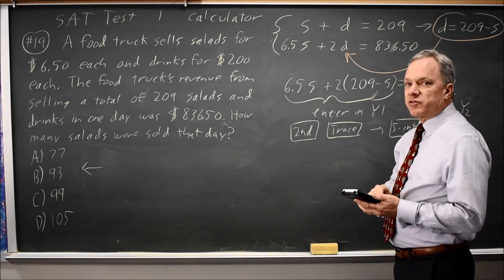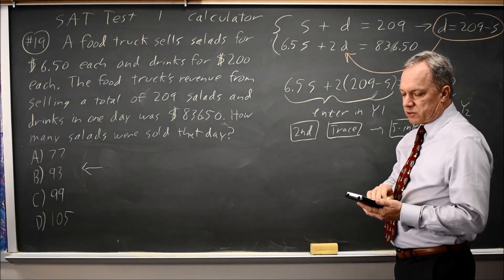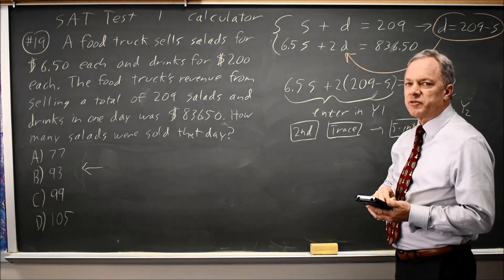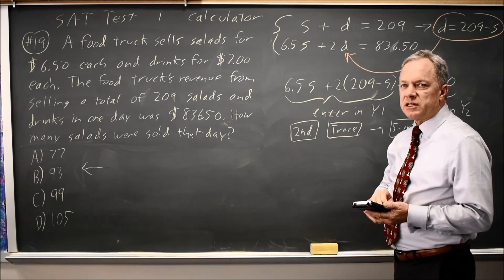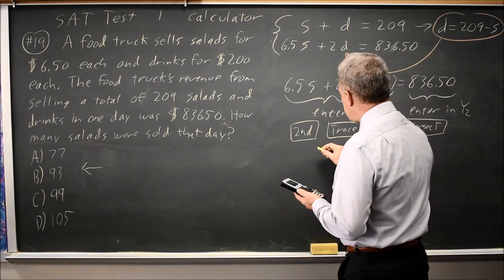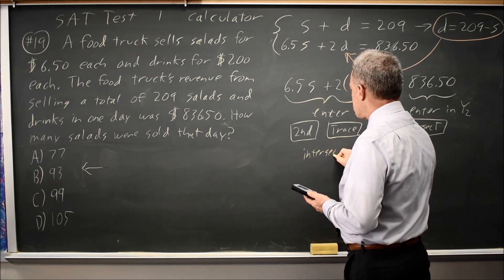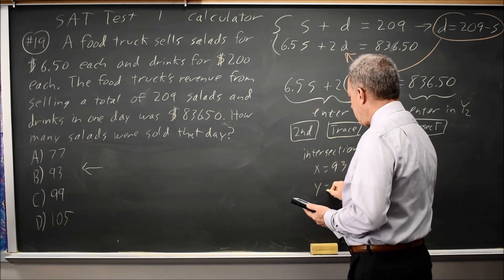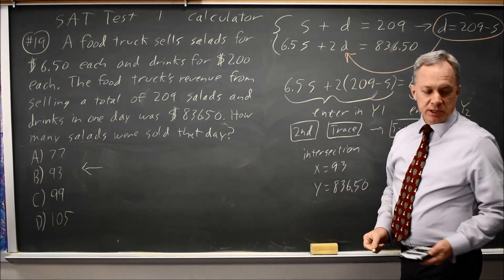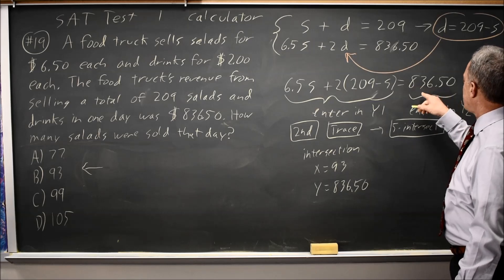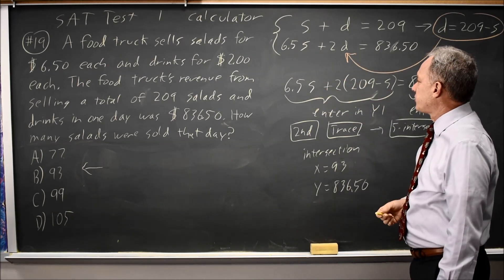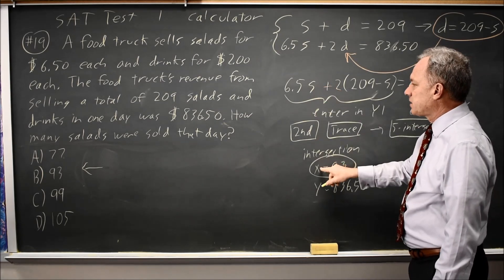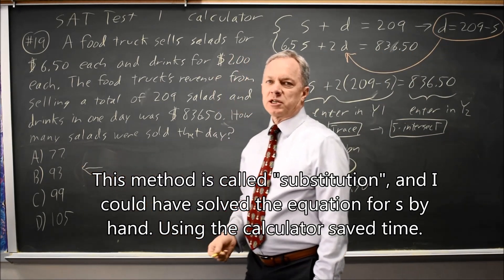And then the calculator defaults to Y1 for your first function, Y2 for the second function, so I just hit enter twice. And a lot of us will use the cursor to move close to the point of intersection. That's not a good use of your time. For guess, just hit enter and see if it comes up with the answer. And it does, it says intersection X equals 93, Y equals 836.50. We knew that if there was a point in the intersection, the Y value would be 836.50, because this expression has to be 836.50 when they intersect. And X equals 93. Since I entered S, the number of salads, it says X. That means our answer is 93, which I already found two other ways.